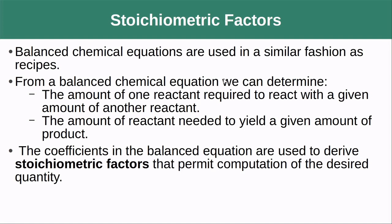The way that we do this is very similar to a recipe. From a balanced chemical reaction, we can determine the amount of one reactant required to react with a given amount of another reactant, and the amount of reactant needed to yield a given amount of product. The coefficients in the balanced equation are used to derive stoichiometric factors that permit computation of the desired quantity.